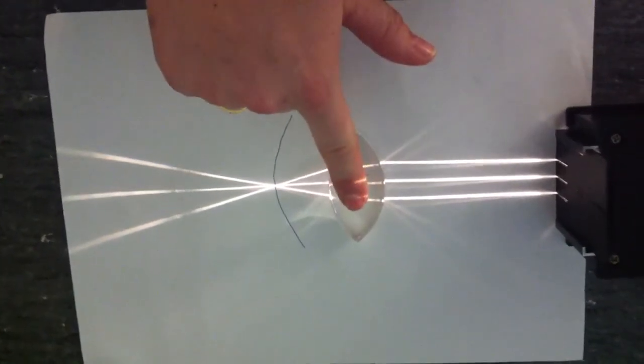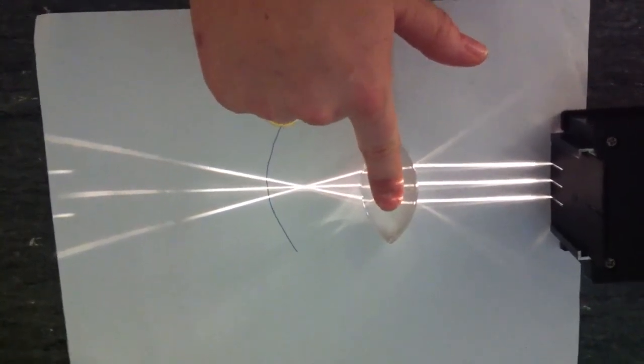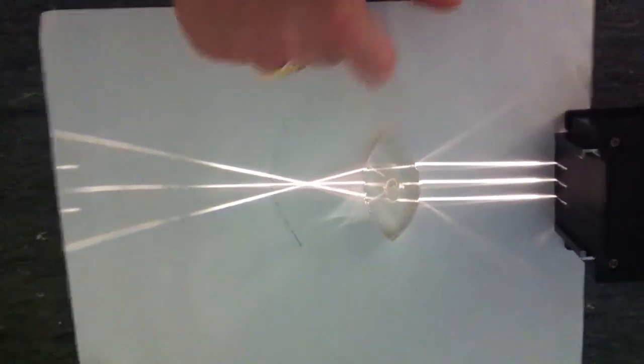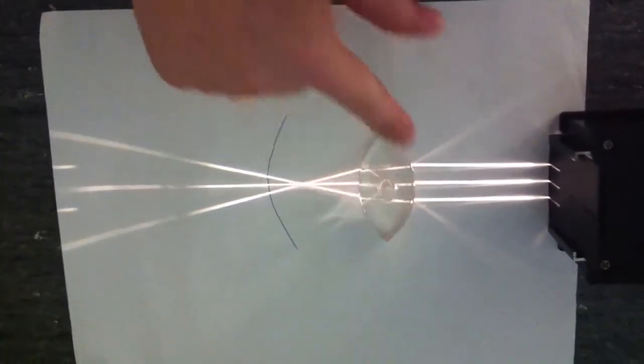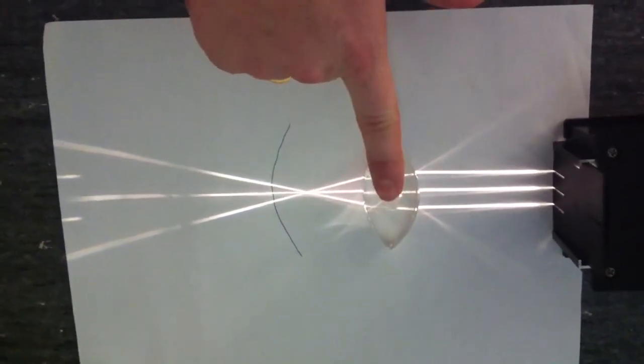Now if I just move this lens, now remember in a real eye the lens doesn't move. If you have an eye disorder like short-sightedness or long-sightedness, the lens actually changes shape. But for this demonstration I'm just going to move it.